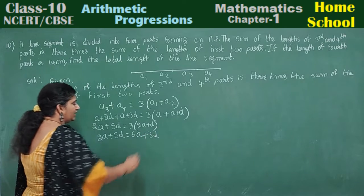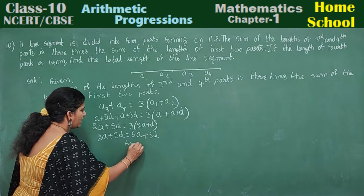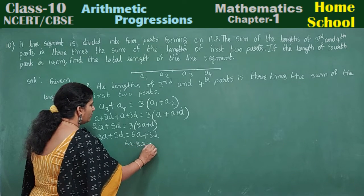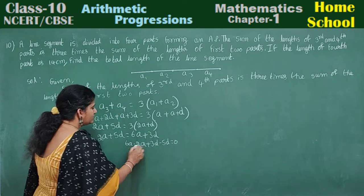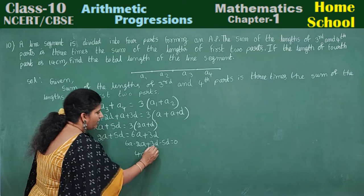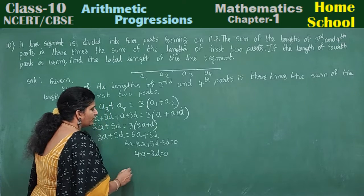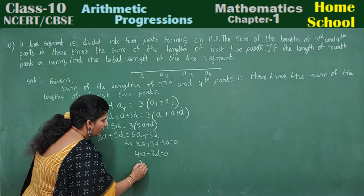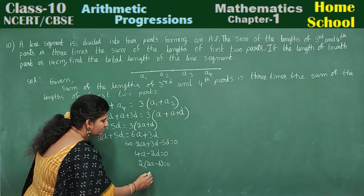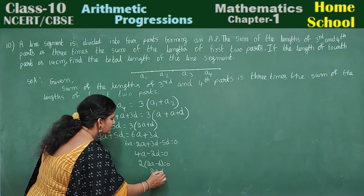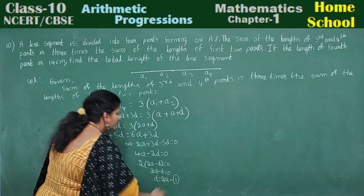Removing the brackets: 2a plus 5d is equal to 6a plus 3d. Bringing all terms to one side: 6a minus 2a is 4a, and 3d minus 5d is minus 2d, equal to zero. Taking out common factor 2: 2a minus d is equal to zero.